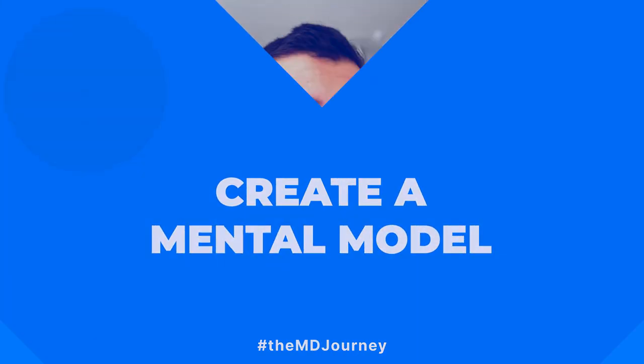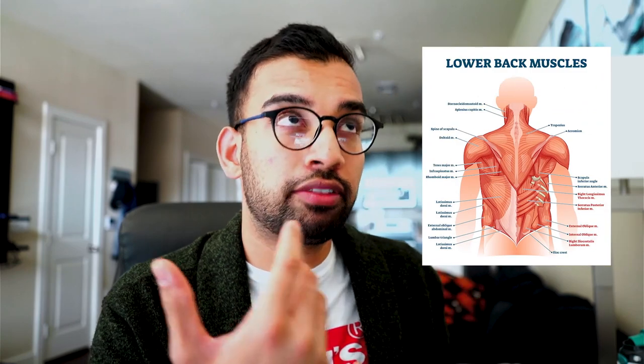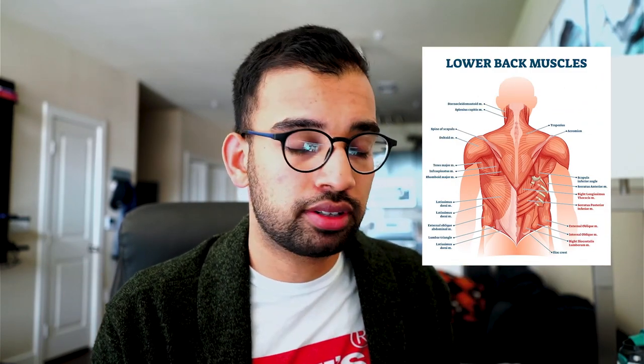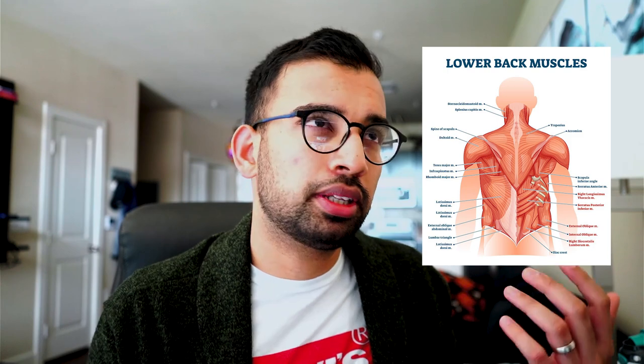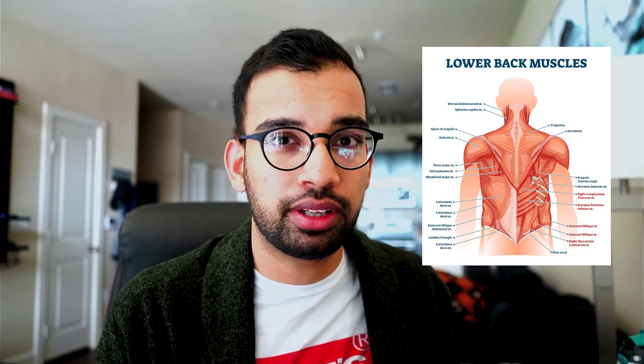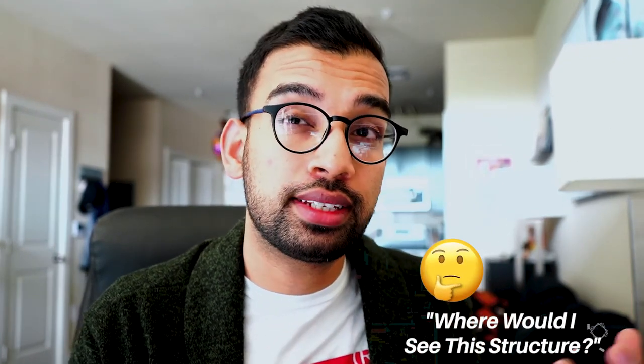There are really three good ways to create a mental model. The first is to do exactly what it sounds like — after watching an overview, think about what muscles will be where on the cadaver. If you're about to dissect the back muscles, ask yourself: where would I see the latissimus, rhomboids, teres major, teres minor, or subscapularis when I do the dissection?